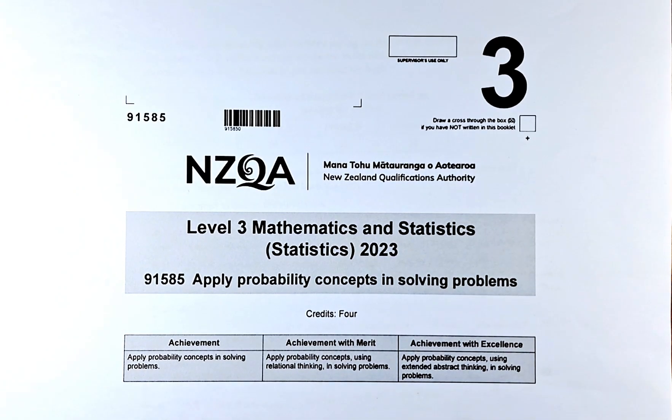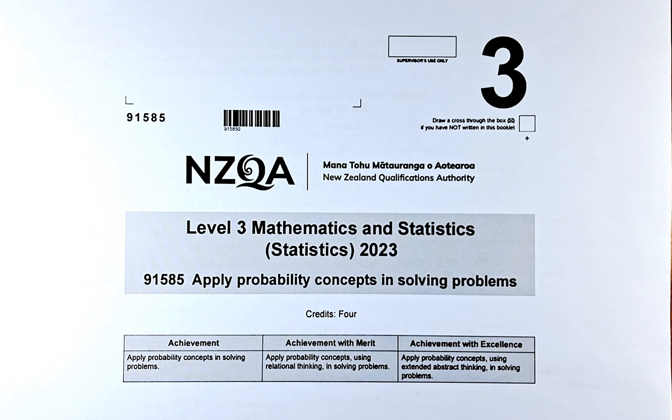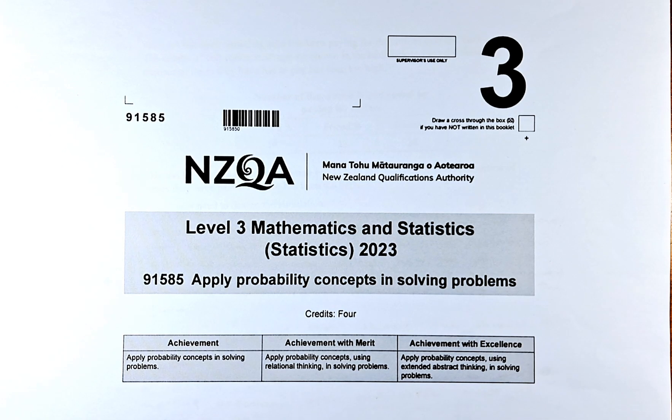Good day and welcome to the last video of the 2023 NCEA Level 3 Statistics Paper: Apply Probability Concepts in Solving Problems. In this video, we are going to do the last excellence question, question 3b part 4.